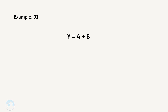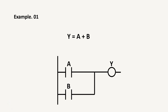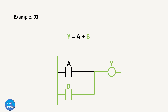If we convert it into a PLC program, it will look like this. When any or all of its inputs are high, output will be high. When any of its inputs is low, output remains high. For output to be low, all inputs must be low.